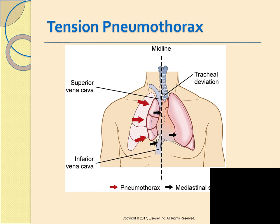A tension pneumothorax is a medical emergency. Both the respiratory and cardiovascular systems are affected. Manifestations include dyspnea, tracheal deviation, decreased or absent breath sounds on the affected side, neck vein distension, cyanosis, and profuse diaphoresis. If the tension in the pleural space is not relieved, the patient will die from inadequate cardiac output and severe hypoxemia. Treatment involves urgent needle decompression followed by chest tube insertion.